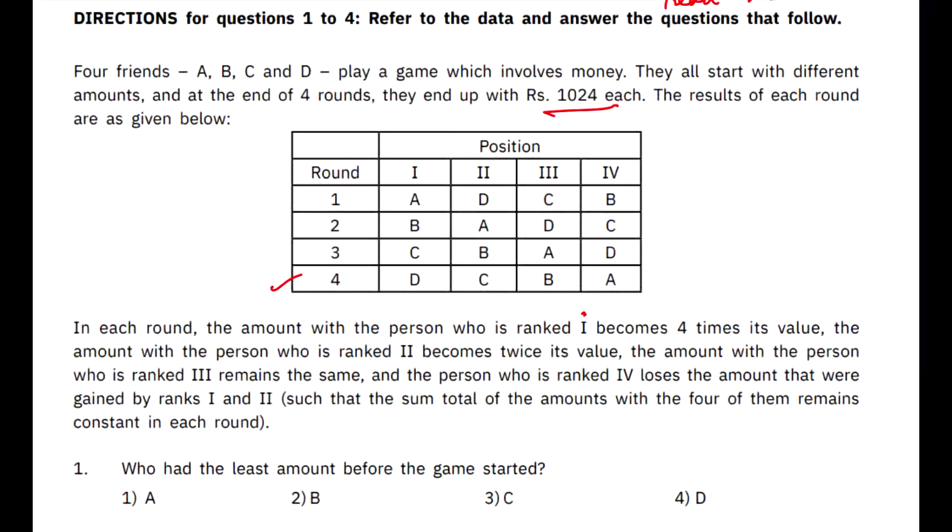Now, this will help me to make a table for it. So what I'll be doing is I'll be making a table. But before that, let us find out the other important things from the set. The other important thing is that whoever is ranked one, his value will get four times the previous value. Whoever is ranked two, his value will get doubled. And whoever is ranked three, the rank value and the amount value will remain the same. And whoever values is rank four, they will lose the amount which was gained by the rank one and the rank two. So this is the most interesting part of the question.